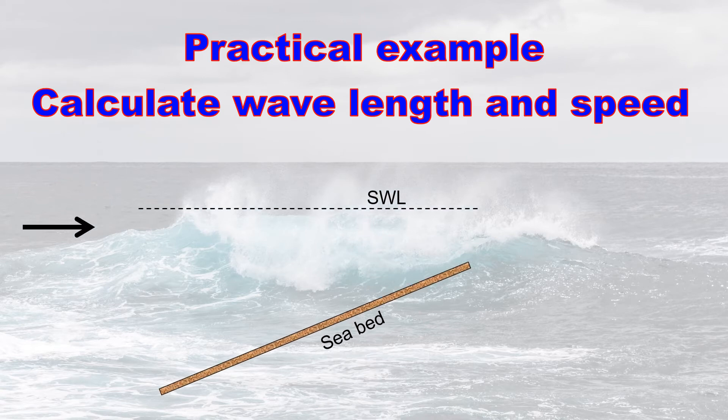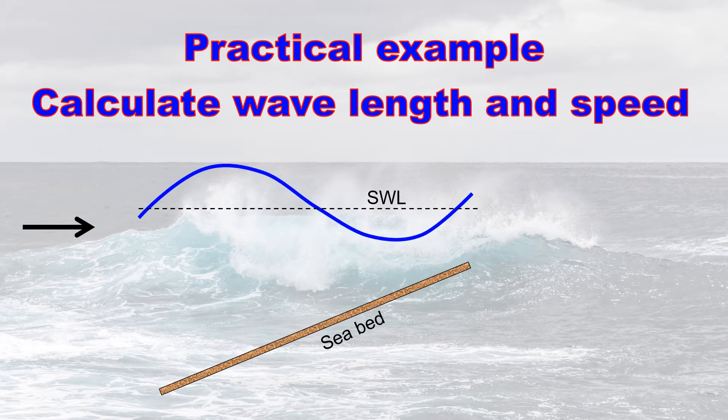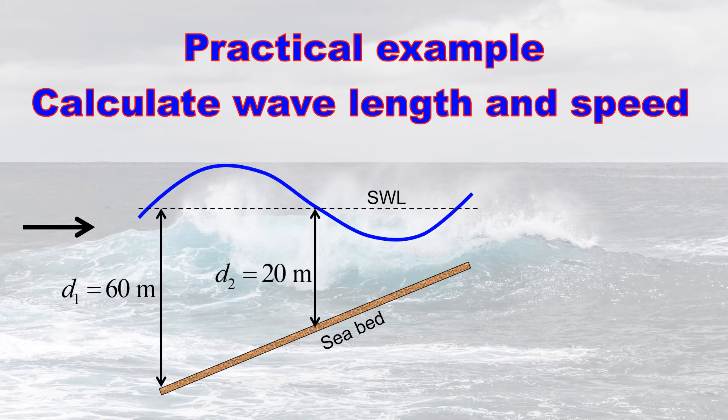Depending on the problem, we need to answer various questions. For example, what is the wavelength? What is the speed? No matter what the problem is, you always need to calculate the wavelength. In this example, we calculate the wavelength and speed for three different depths: 60, 20, and 0.9 meters.